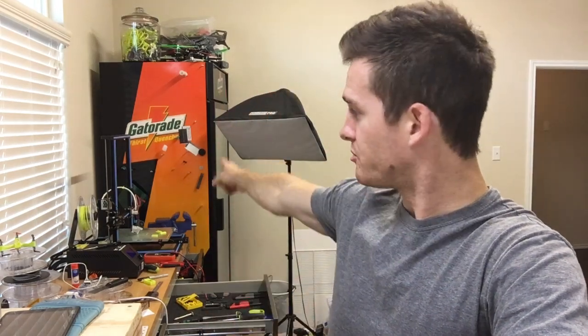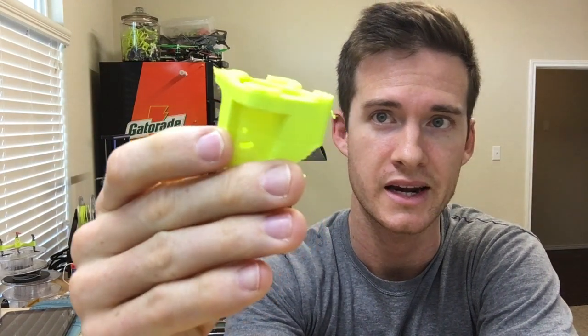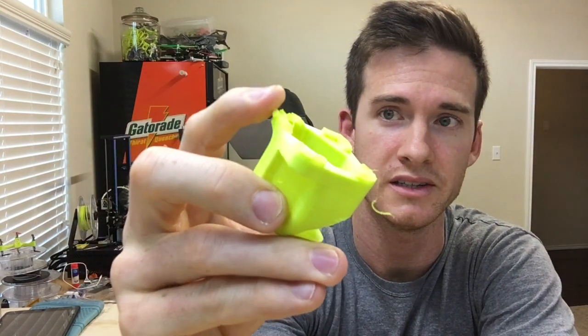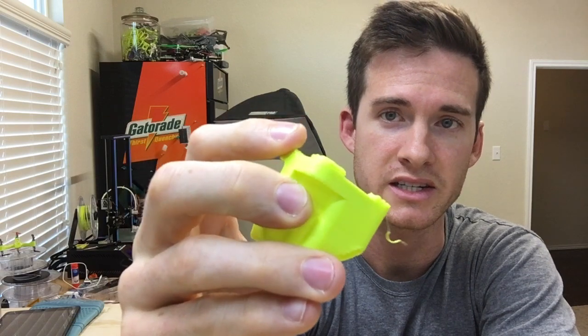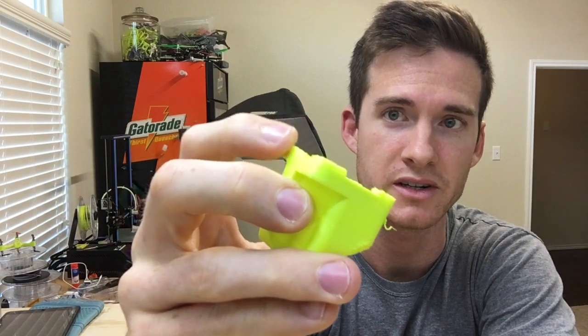I just tried to print a part on my Creality CR-10 and the cooling fan for the hot end stopped blowing. That caused the hot end to heat up and the heat break got too hot, which started to under-extrude because the molten plug couldn't easily be retracted and pushed back in. The heat affected zone got too big and tacky.